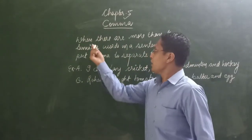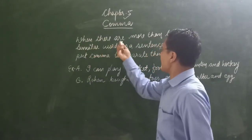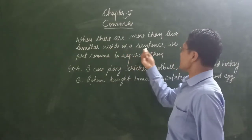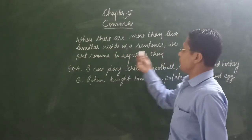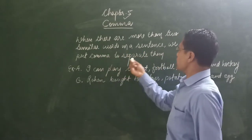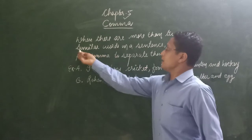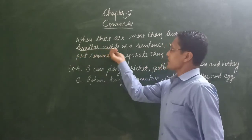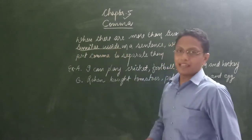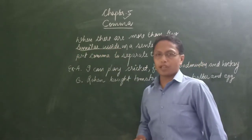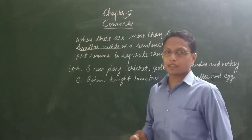When there are more than two similar words in a sentence, we put a comma to separate them. Similar words — when a sentence has similar types of words.